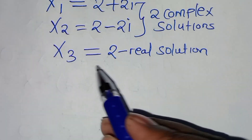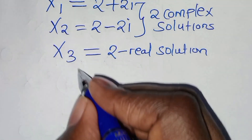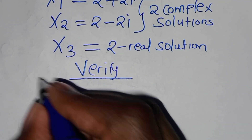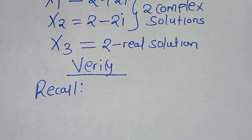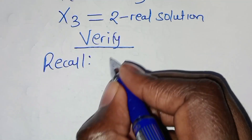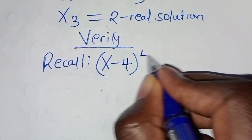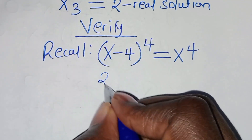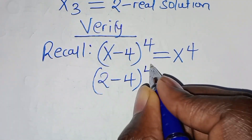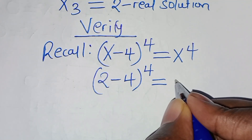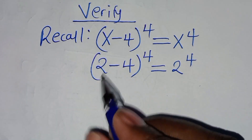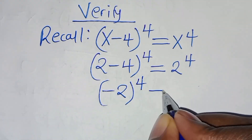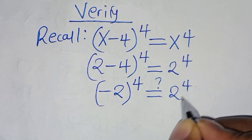So let's verify that x3 satisfies the equation. If you recall, we have that x minus 4, raised to power 4, is equal to x to power 4. We have the value of x which is 2, so we have 2 minus 4, raised to power 4, this is equal to 2 to power 4. So we have 2 minus 4, which is minus 2, raised to power 4, this is equal to 2 to power 4, which should give us a value of 2 to power 4.